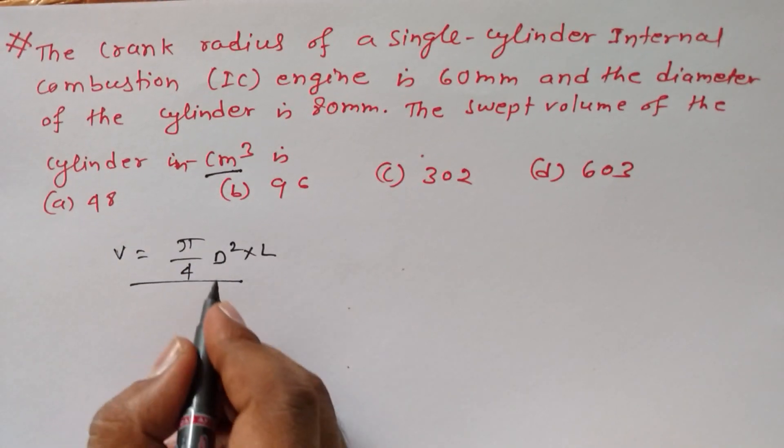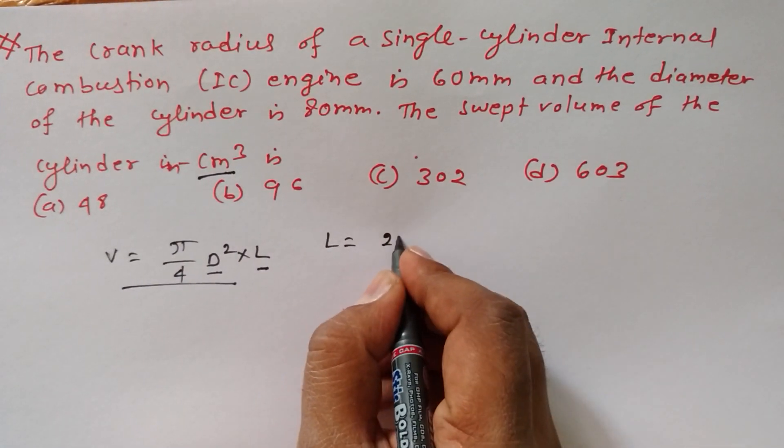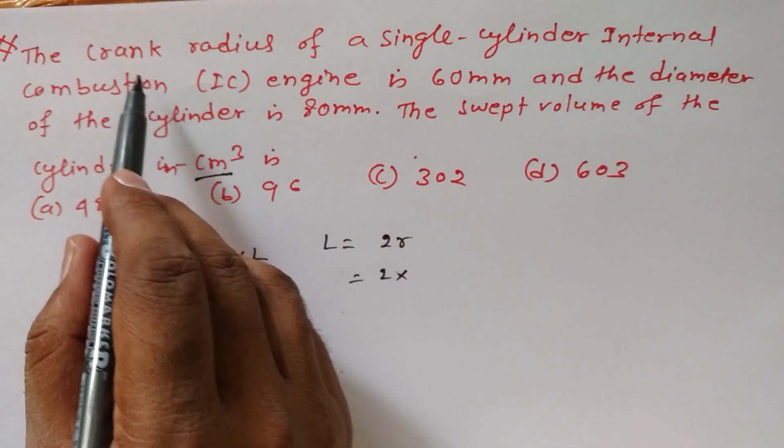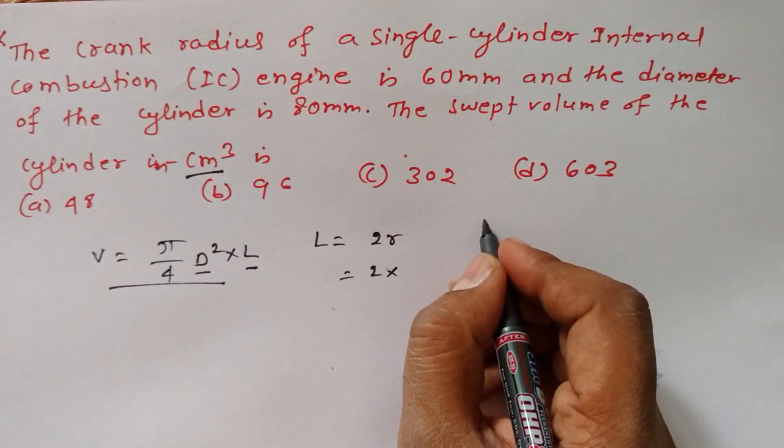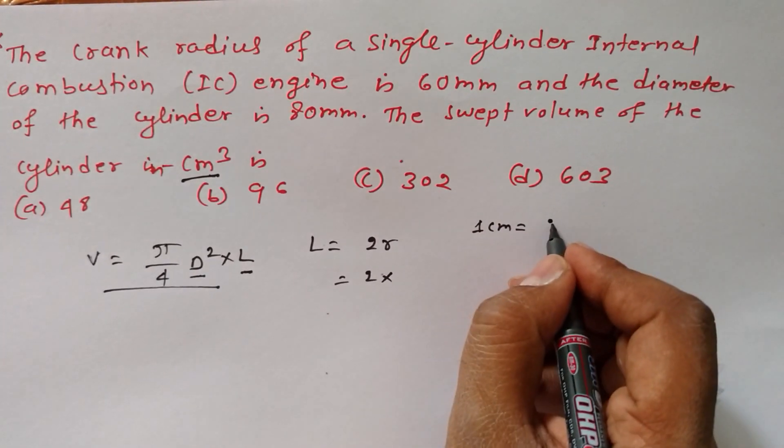So here we need to have D and L. We know L is equal to 2R, means this one should be our crank radius, 60mm. Now one centimeter is equal to how much? You know that, 10 to the power minus 2 meter. So one centimeter is equal to how much? 10mm.